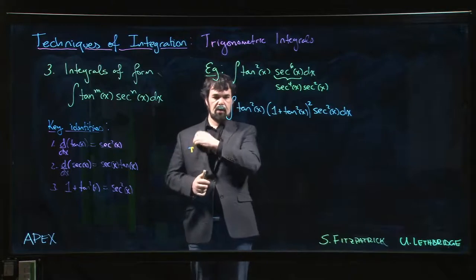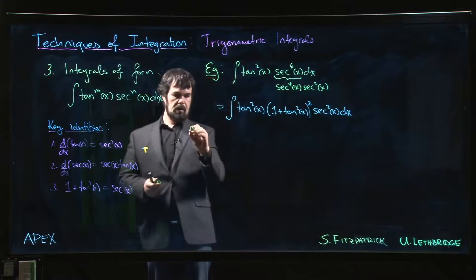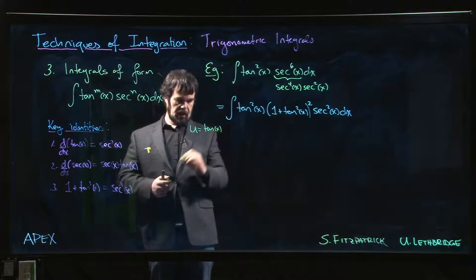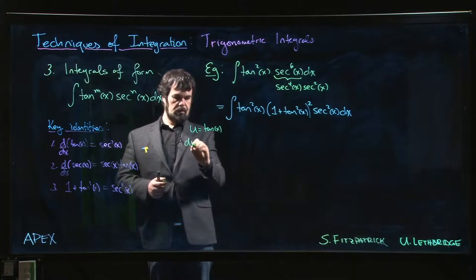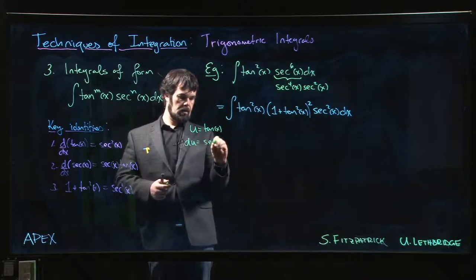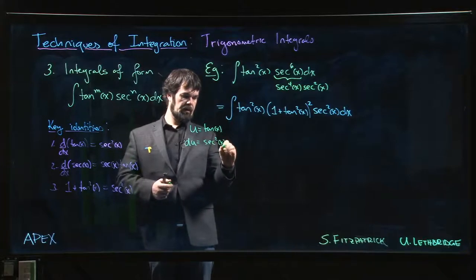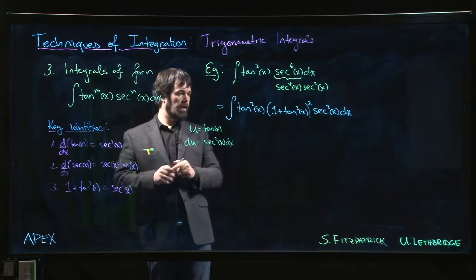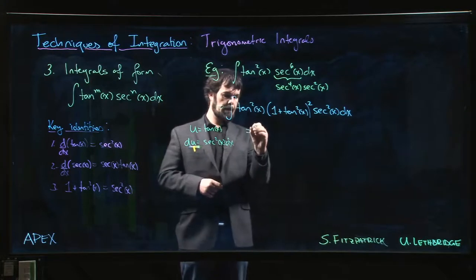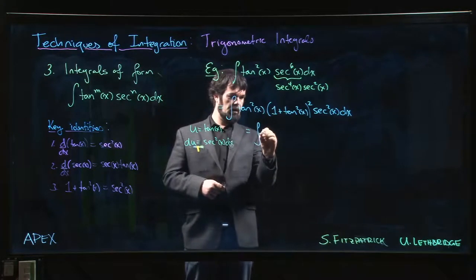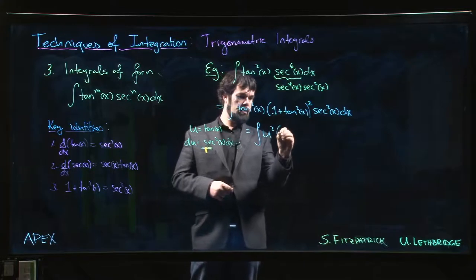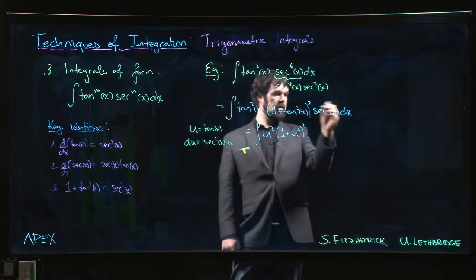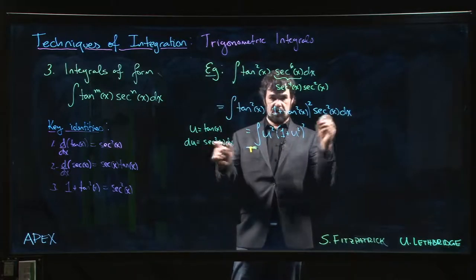And now you're set up for that u-substitution. Now we can let u equal to tan x. Du is going to be secant squared x dx. And this integral is going to become the integral of u squared times 1 plus u squared squared. And this, of course, this is just du.